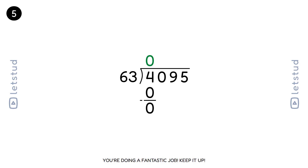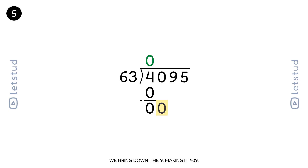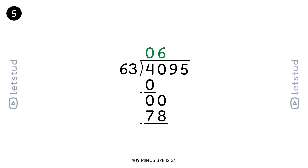You're doing a fantastic job, keep it up. Now let's bring down the next digit, 9, making it 409. 63 fits into 409 six times. 63 times 6 is 378. 409 minus 378 is 31.